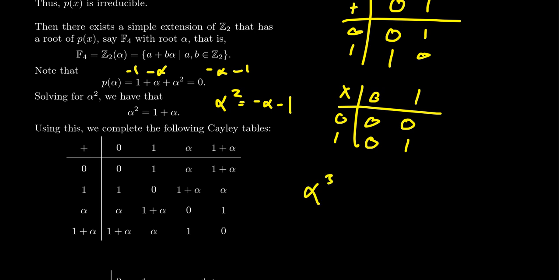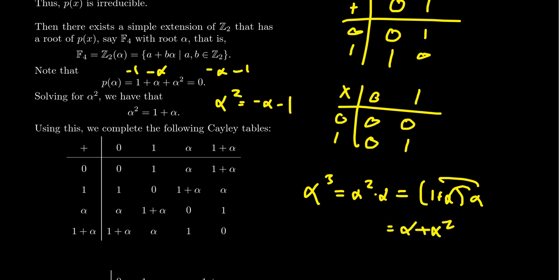By induction we can handle higher powers as well. For example, α³ = α²·α = (1+α)·α = α+α² = α+(1+α) = 2α+1. Since 2α=0 in characteristic 2, α³=1. So α is actually a third root of unity in this field.